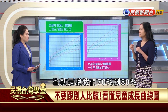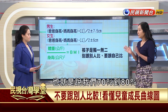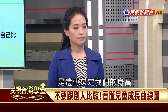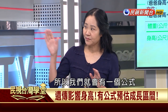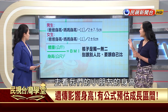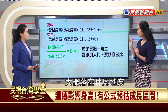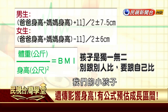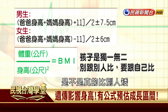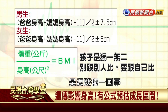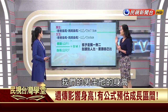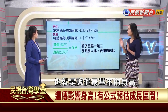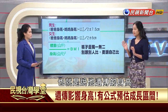曲線圖一邊是身高，另一邊是體重。孩子不能跟別人比，因為身高70%到80%是遺傳決定的。我們有公式來計算小朋友的遺傳身高：男生是爸爸媽媽身高加11再除以2，這是該男生最基本的遺傳身高。